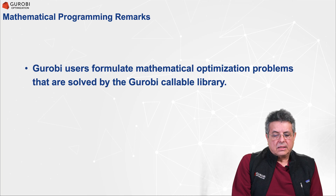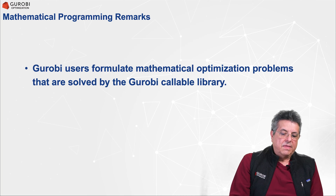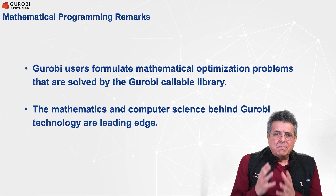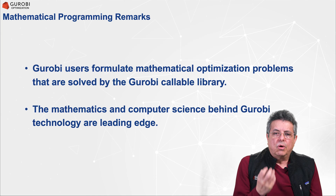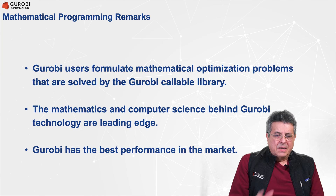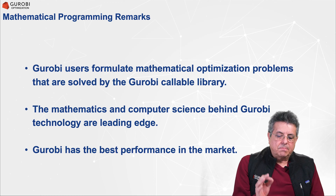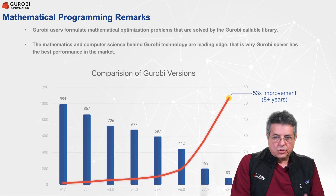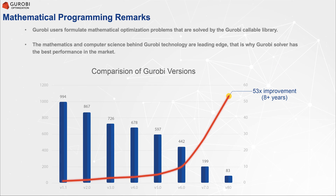Gurobi users formulate a mathematical optimization problem that will be solved by using the Gurobi callable library, also called the Gurobi optimizer. The mathematics and computer science behind Gurobi technology is really leading-edge. Gurobi has the best performance in the mathematical optimization market — there is no other solver that is as fast. In the past eight years, Gurobi has achieved a cumulative improvement of 53 times faster than the original Gurobi algorithm.